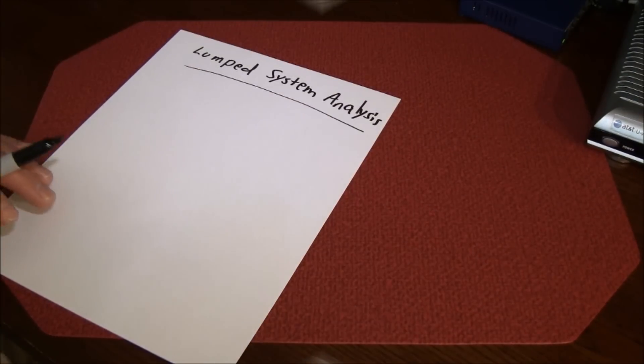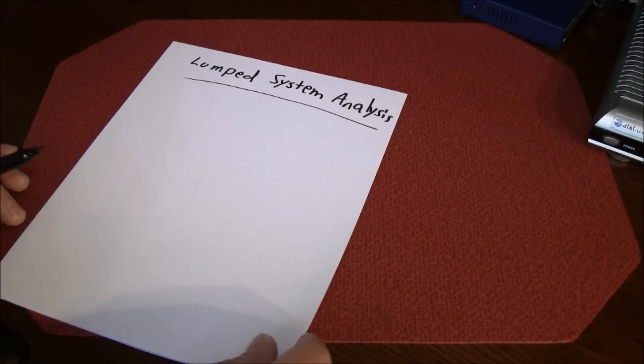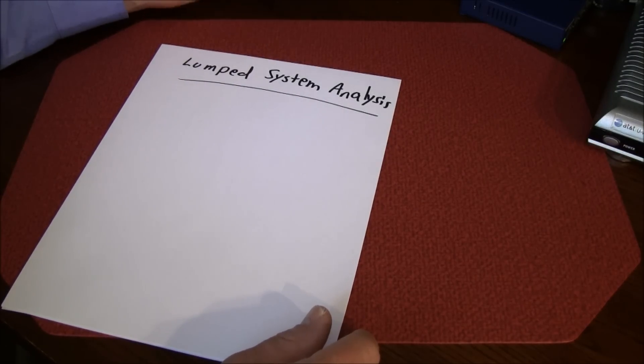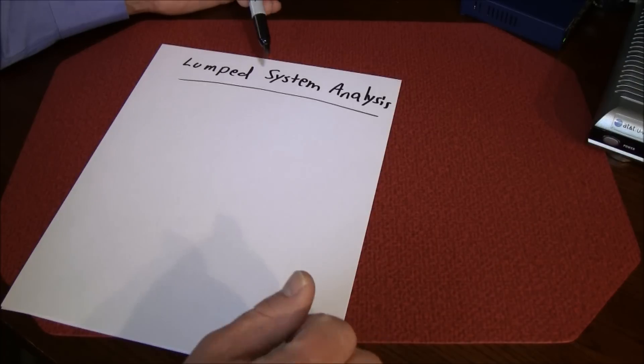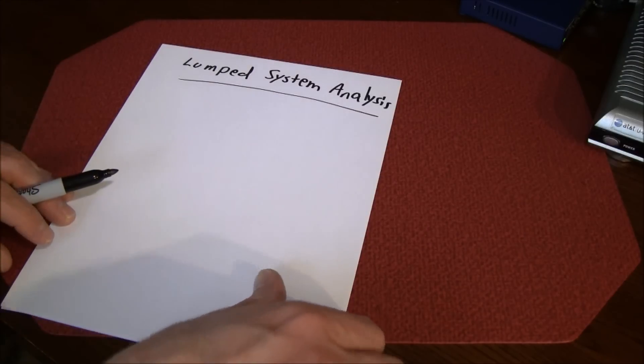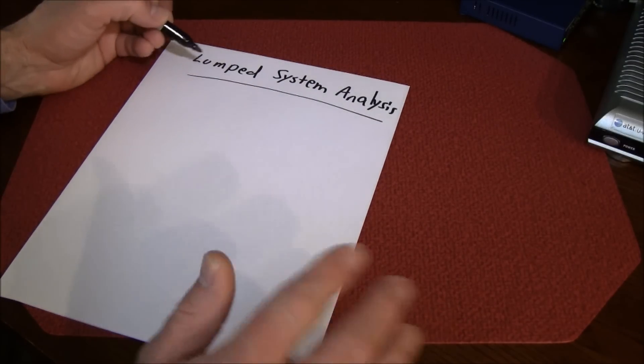Okay, we'll start the transient heat transfer analysis using the lump system analysis. This is one way to model transient heat transfer problems. Another method is to use the one term approximation, we'll do that one next time. But we'll start with the model here called the lump system analysis.